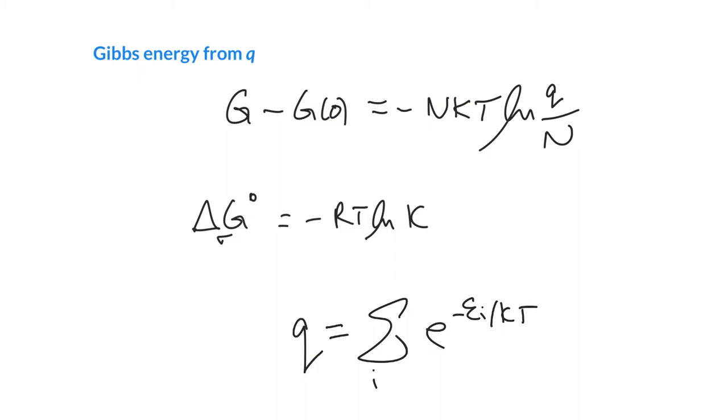And then basically, we've got a series of recipes to turn this into energy, to entropy, to Gibbs energy, and to things like equilibrium constants. So that allows us to basically predict all of chemistry from those principles.